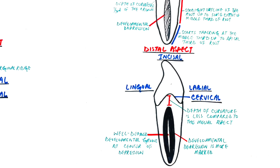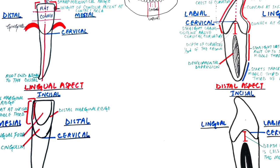The broader labial-lingual width of the crown and root as compared to its mesial-distal width can be observed on both mesial and distal surfaces.